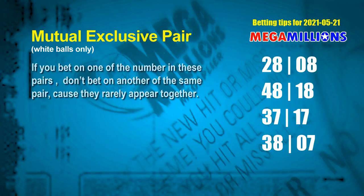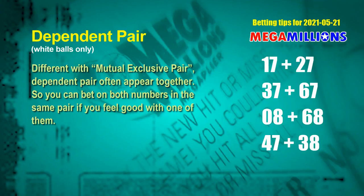Here are some tips to increase your hit odds. Mutual exclusive pairs: these numbers both match the following units digit rule, but according to hundreds of results, they rarely appear together. If you bet on one of them, don't bet the other in the same pair. The white ball mutual exclusive pairs for the next draw are: 28 and 08, 48 and 18, 37 and 17, and 38 and 07.